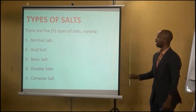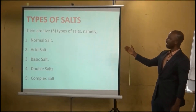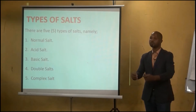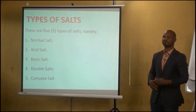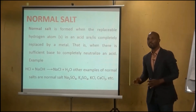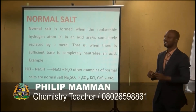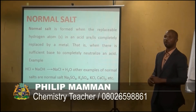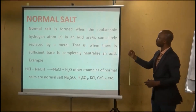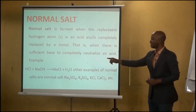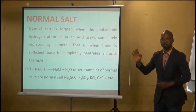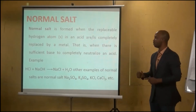We have five basic types of salt: normal salt, acid salt, basic salt, double salt, and complex salt. The first is normal salt, which is formed when all the replaceable hydrogen atoms in an acid are completely replaced by a metal. This is achieved when there is sufficient base to completely neutralize the acid. For example, HCl reacting with sodium hydroxide gives sodium chloride plus water — with no hydrogen atom remaining.